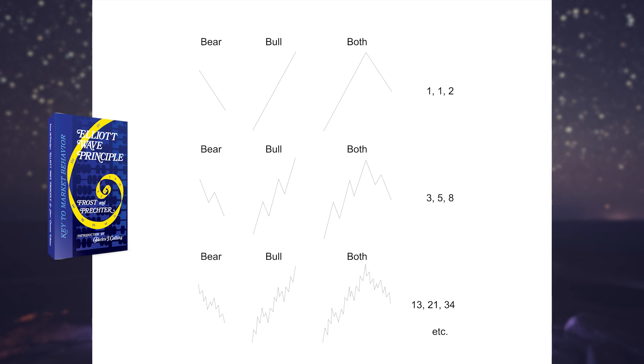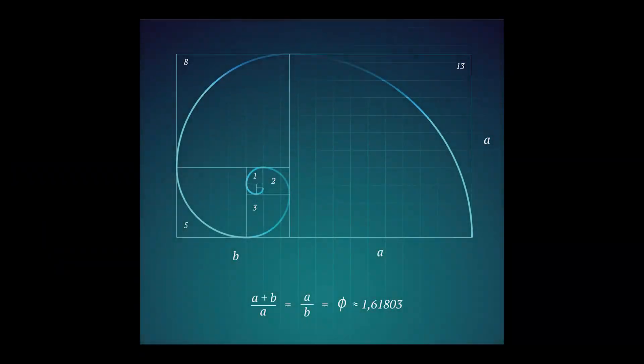The simplest expression of a correction is a straight-line decline. The simplest expression of an impulse is a straight-line advance. A complete cycle is two lines. In the next degree of complexity, the corresponding numbers are 3, 5, and 8. This sequence can be taken to infinity.